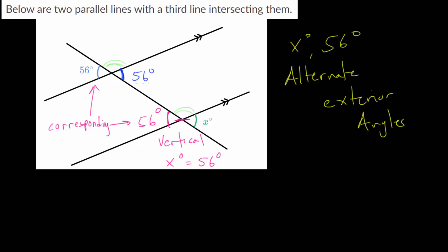And these here are called alternate interior angles. They are alternate, since they're on either side of the transversal, but they are interior, since they are between the two parallel lines.